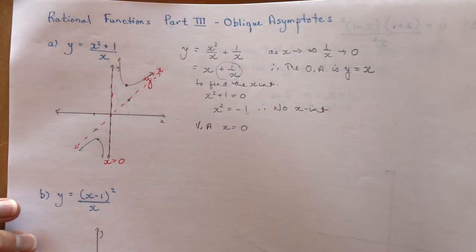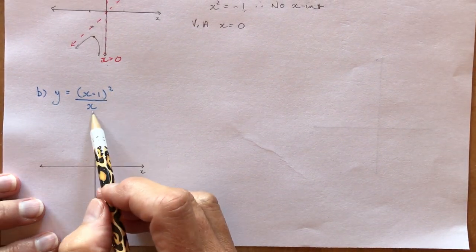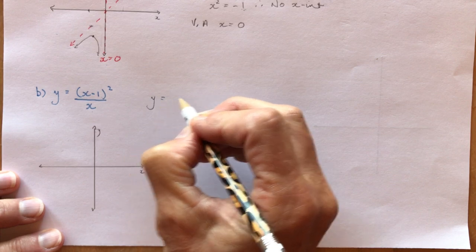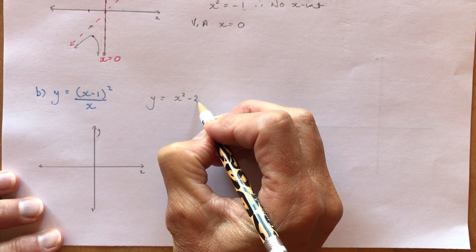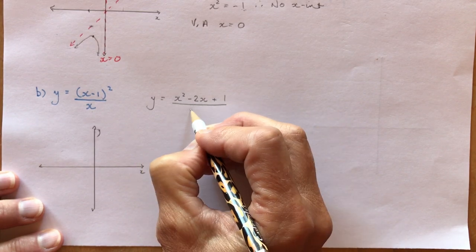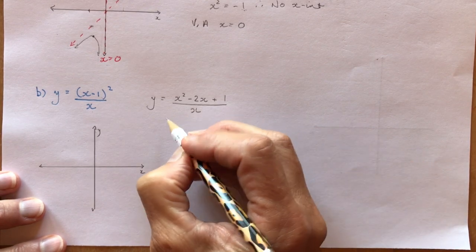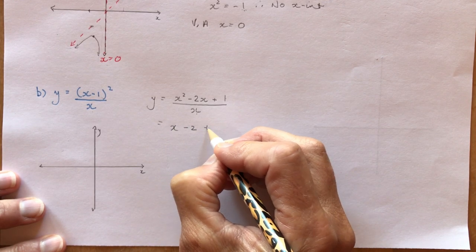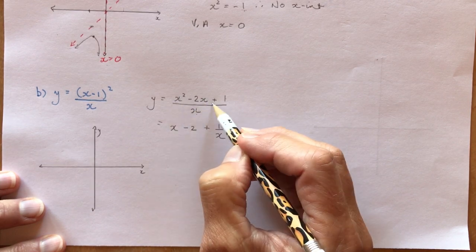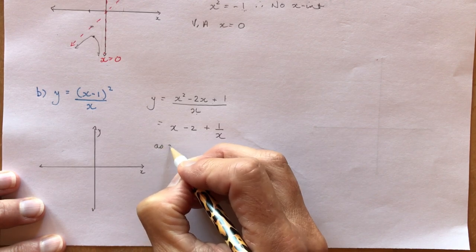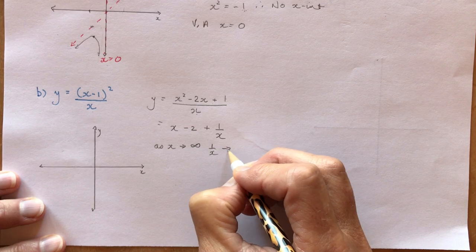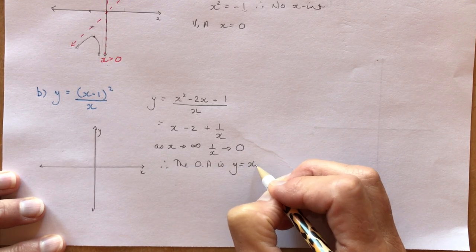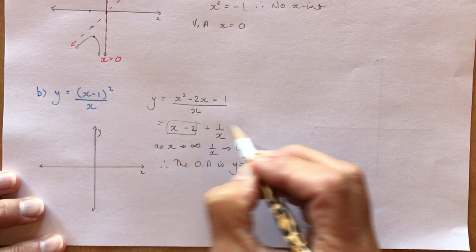Next: y = (x - 1)²/x. To find the oblique asymptote, expand the numerator: square the binomial to get x² - 2x + 1, all divided by x. Divide each term by x: that gives x - 2 + 1/x. As x approaches infinity, 1/x approaches zero, therefore the oblique asymptote is y = x - 2.